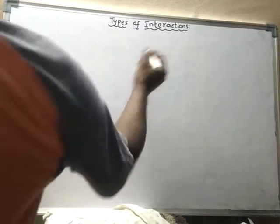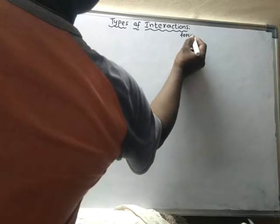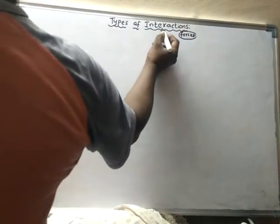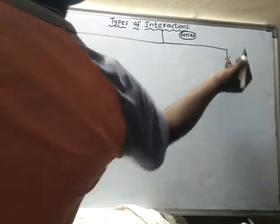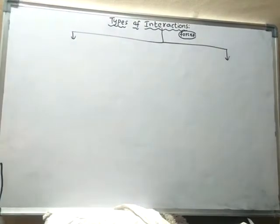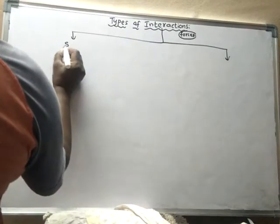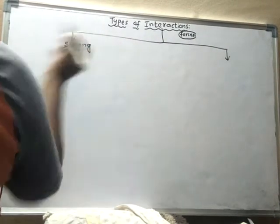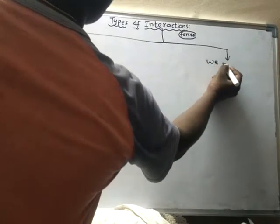These interactions, or forces, they are classified. They are mainly of two types: strong interactions, also called strong forces, and weak interactions, or weak forces.